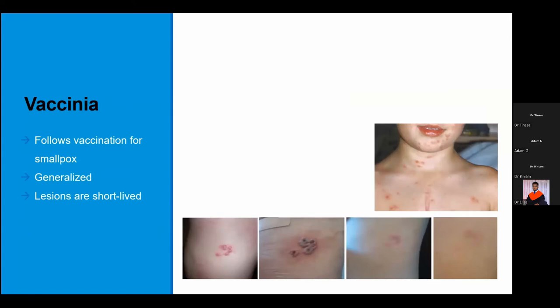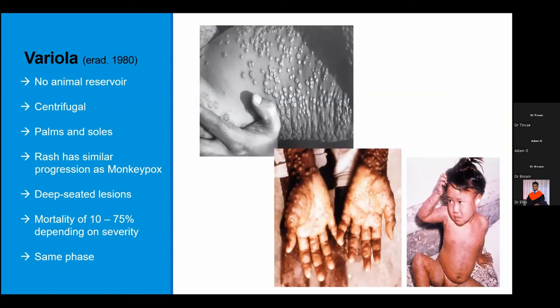Smallpox, or variola, was eradicated in 1980 and shares the most symptoms with monkeypox. They are almost similar in having a centrifugal distribution — more peripherally — with palms and soles involvement, and lesions at the same phase. What is different is that in smallpox there is no animal reservoir, and it has a higher mortality compared to monkeypox. Thankfully, we no longer have to deal with this diagnosis.